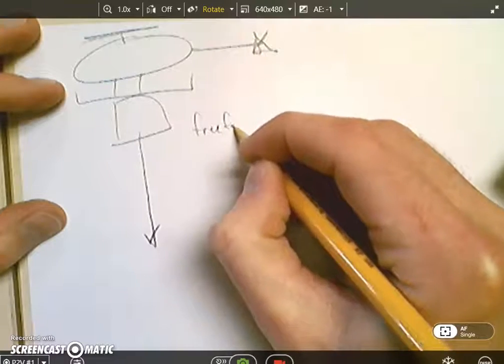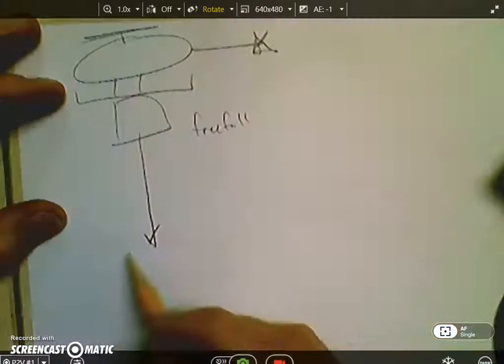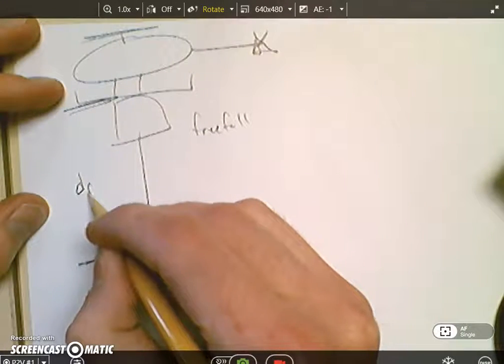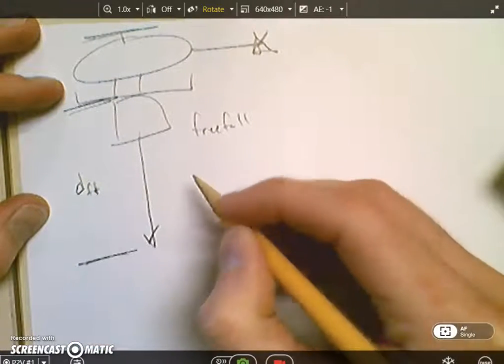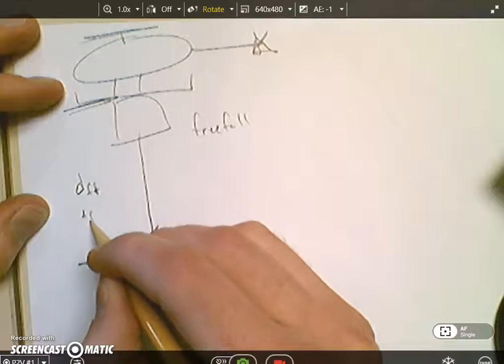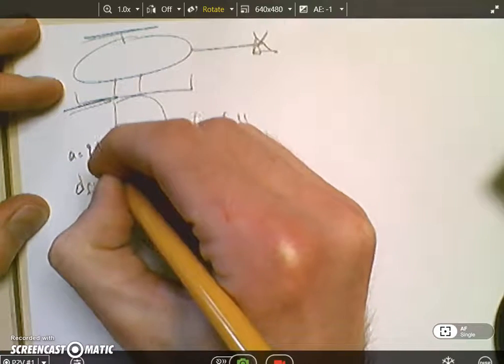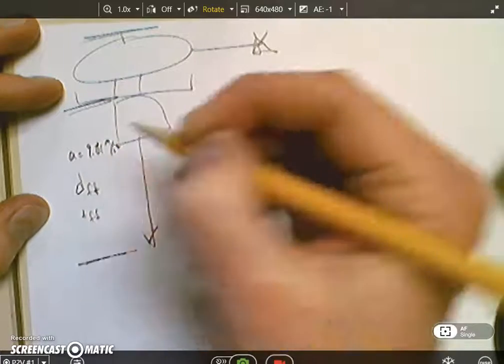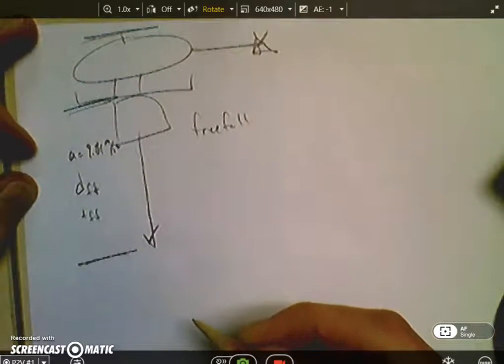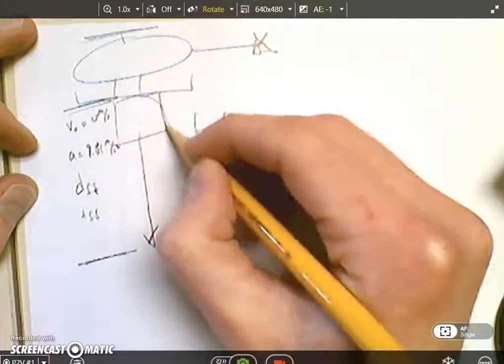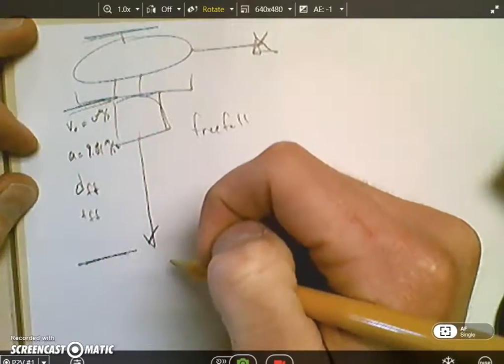So free fall for a certain distance. It's got a free fall time and during this free fall it is accelerating at 9.81 meters per second squared and its initial velocity is 0 meters per second when it leaves the helicopter and drops.